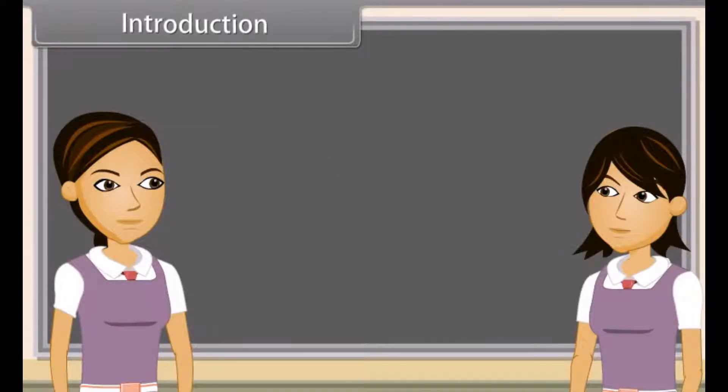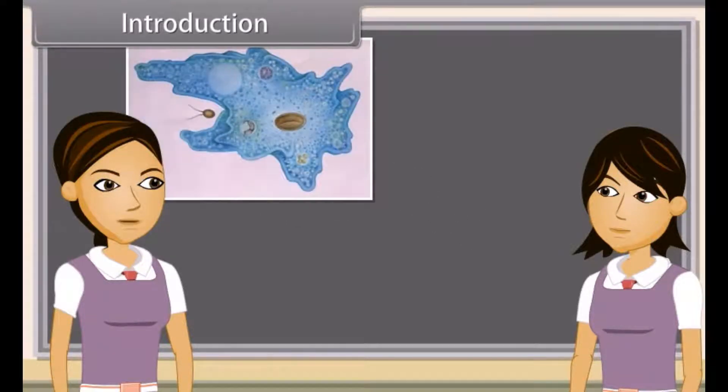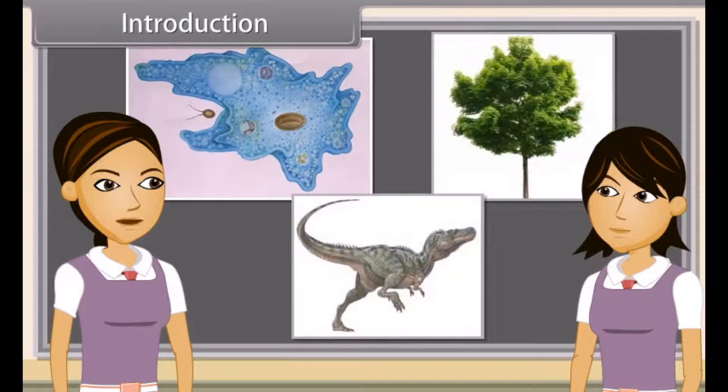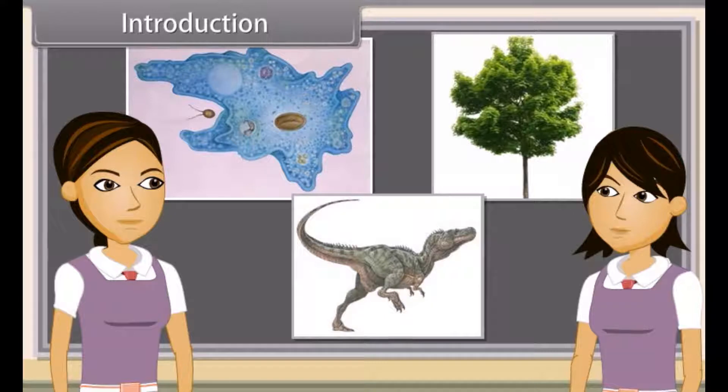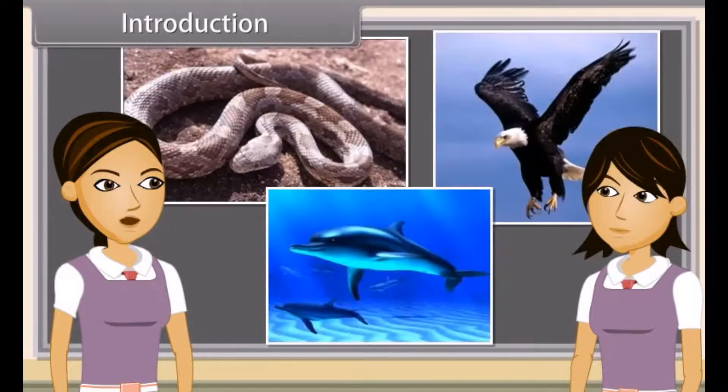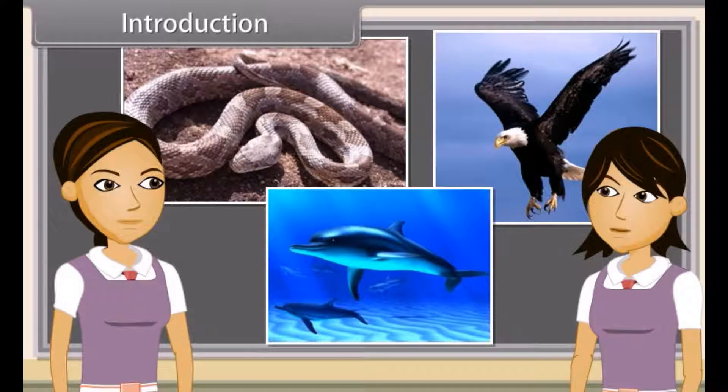Introduction. Can you name this organism? Yeah, this is amoeba. Name these organisms as well. The first one is a tree and the second a dinosaur. Identify these creatures. Snake, eagle and dolphins.